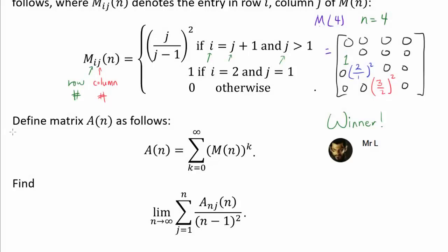From here, we define matrix A of N as the sum of all non-negative powers of M of N. So A of N equals M of N to the 0 power — which is the identity matrix — plus M of N to the 1st power, M of N to the 2nd power, M of N to the 3rd power, and so on.